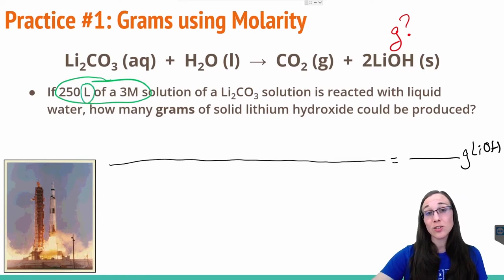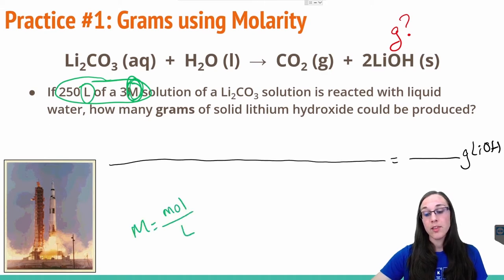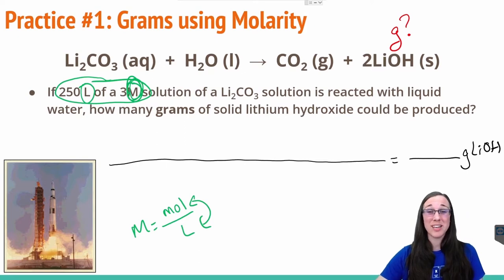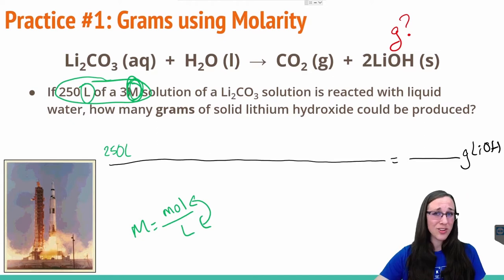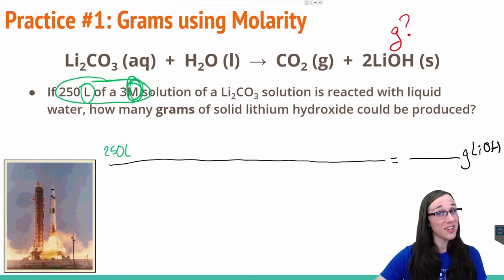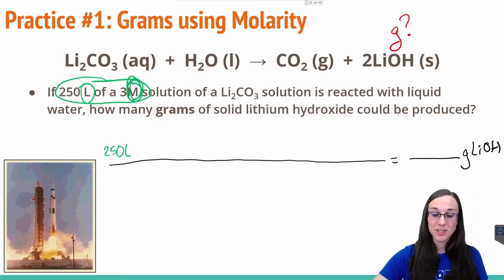The 250 liters only has one unit, whereas this M here stands for moles per liter — that has two units associated with it, and that's always a more challenging way to start. So we're going to start this dimensional analysis problem using 250 liters as the first thing on our line. And that's 250 liters of lithium carbonate, so we need to make sure that we label that as well.